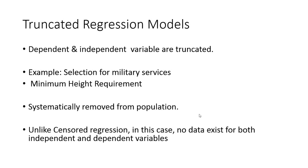Unlike censored regression, in truncated regression no data exists for both independent and dependent variables. In censored regression, we did not have data for the dependent variable, but we had data for the independent variable. But in truncated regression, there is no data for either of them.